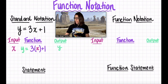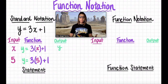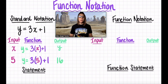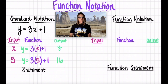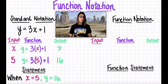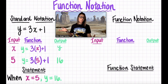Let's look at an example. If we were to input 5, then that would be y equals 3 times 5 plus 1. Well, 3 times 5 is 15. 15 plus 1 gives us an output of 16. So the statement here is that when x equals 5, y equals 16. This is the notation that you should be used to at this point.